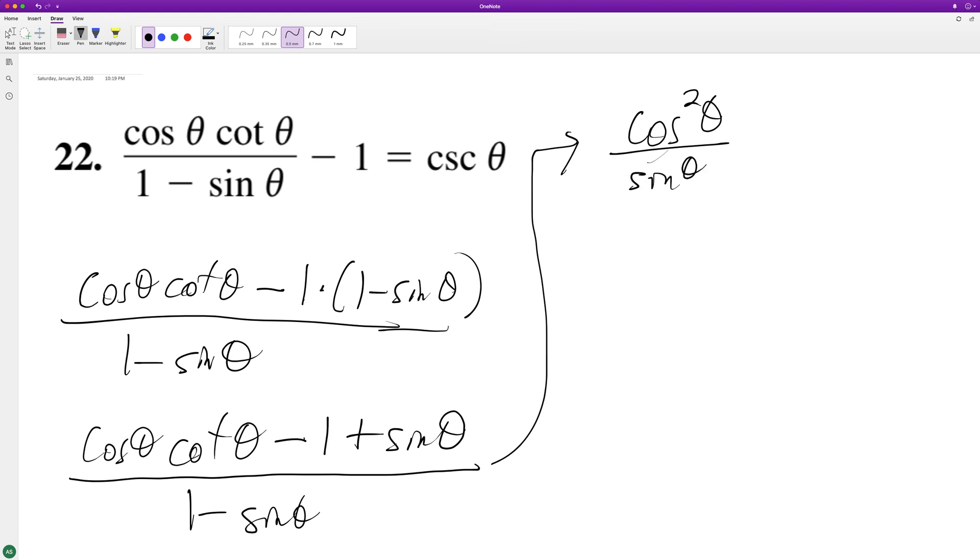And then we can put another sine theta under this sine theta, so it becomes plus sine squared theta minus one.